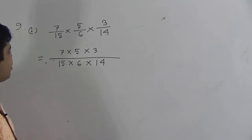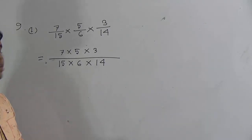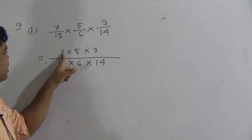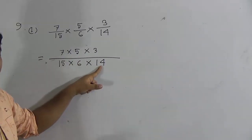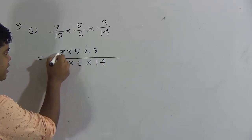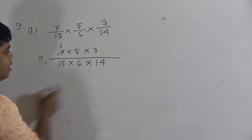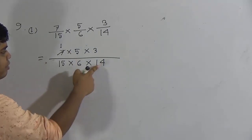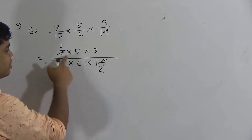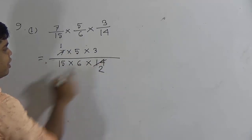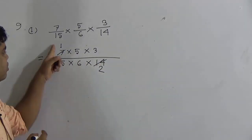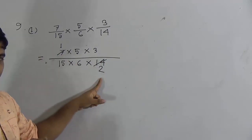We notice common factors between numerators and denominators. Seven and 14 — both numbers are divisible by 7. If we divide 7 by 7, we get 1. And if we divide 14 by 7, we get 2. So 7 and 14 are both cancelled by 7, giving us 1 and 2.